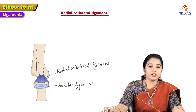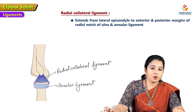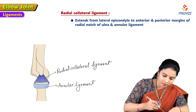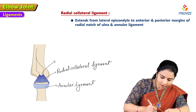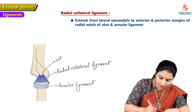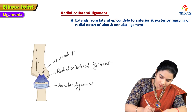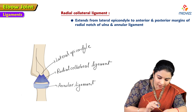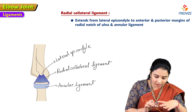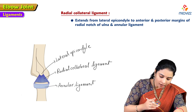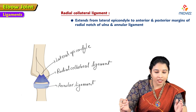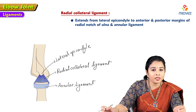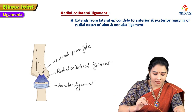The radial collateral ligament extends from the lateral epicondyle to the anterior and posterior margins of the radial notch of the ulna. It blends with the annular ligament, and its distal attachment is to the radial notch of the ulna where the annular ligament also attaches.